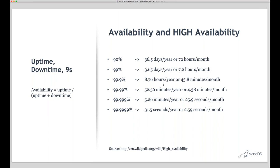You shouldn't look too closely at these numbers — there's no guarantee that a system claiming five nines will only have 5.26 minutes of downtime per year. I've actually seen a presentation claiming ten nines availability, which works out to a couple of nanoseconds per year of downtime. That's probably not what you'd actually get. But it's still a useful way of classifying different systems.